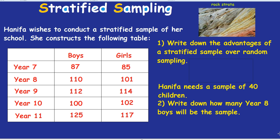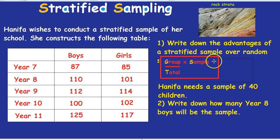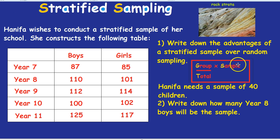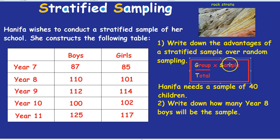How do we make sure they are fairly represented? We need this formula, and it's quite important: group divided by total, times by sample.